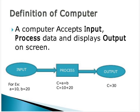The second point in the definition of computer: a computer accepts input, processes data, and displays output on screen. So what are the three steps involved? Input, process, output.